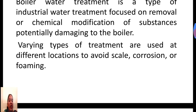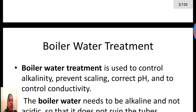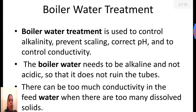There are some common problems like scaling, corrosion, and foaming that will occur if the substances are not properly treated. Normally boiler water treatment is used to control the alkalinity, prevent scaling, correct pH, and to control the conductivity. This is the main goal of boiler water treatment.